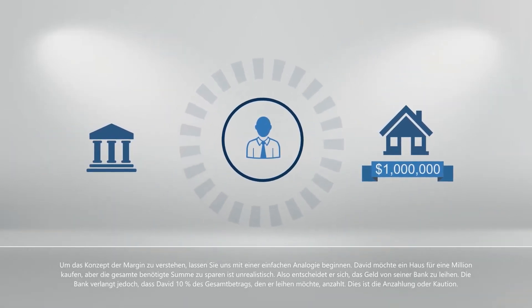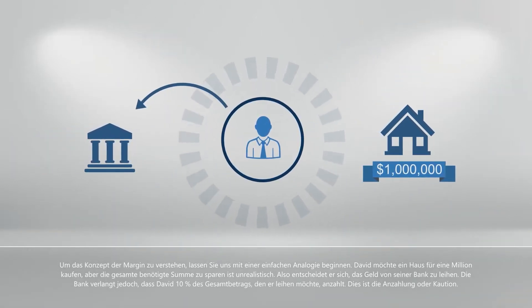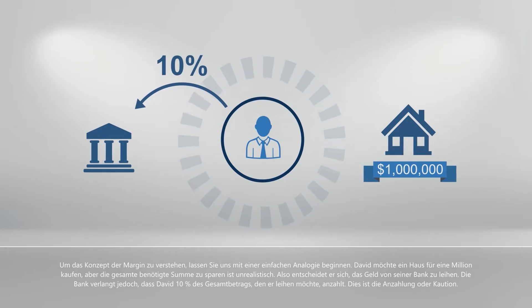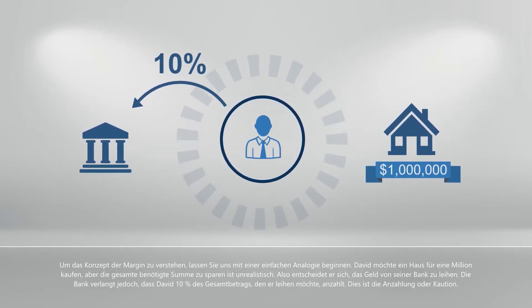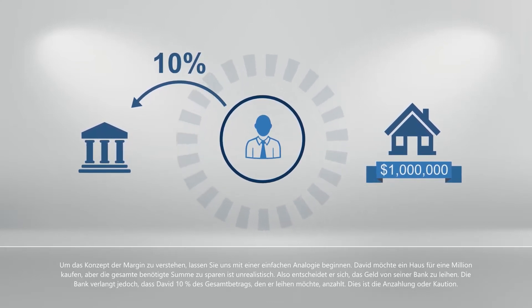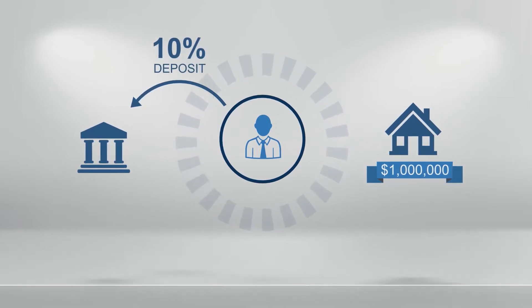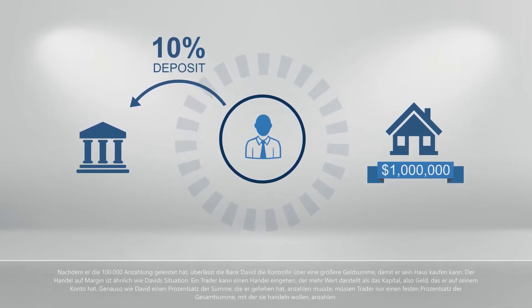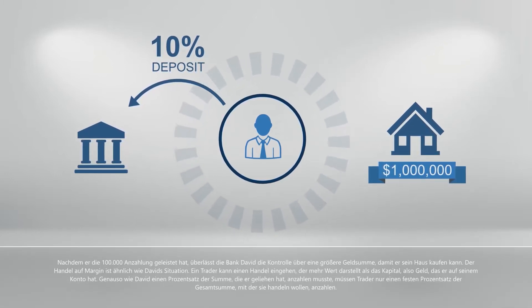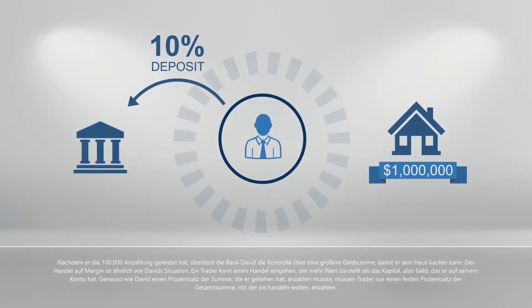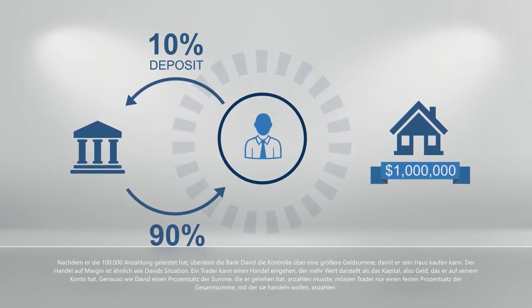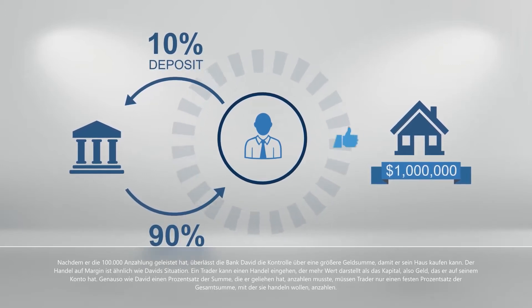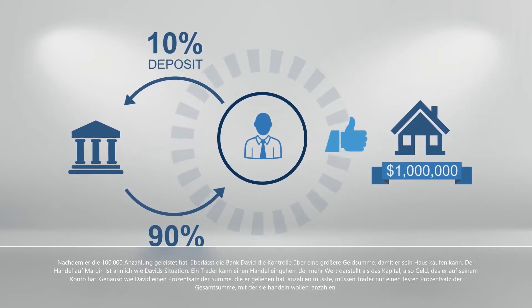So he opts to borrow the money from his bank. The bank, however, requires that David puts down 10% of the total amount he wishes to borrow. This is the down payment or deposit. Having made the 100,000 down payment, the bank entrusts David with the control of a larger sum of money, so that he can buy his house.